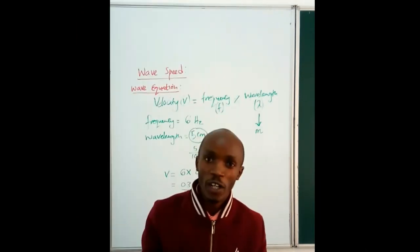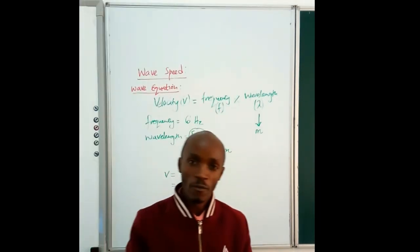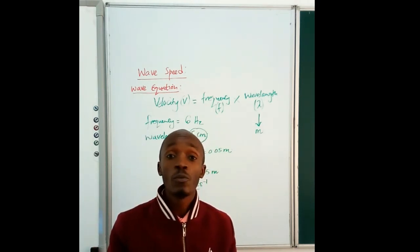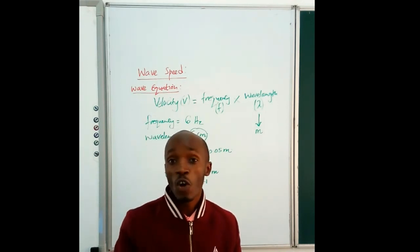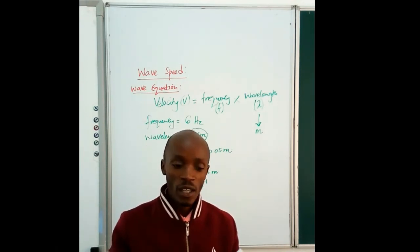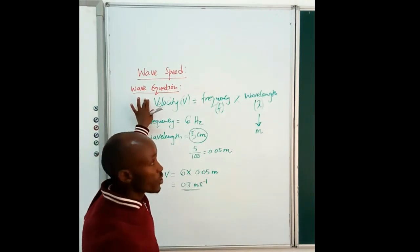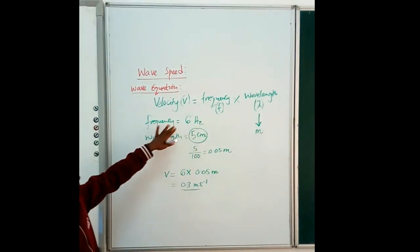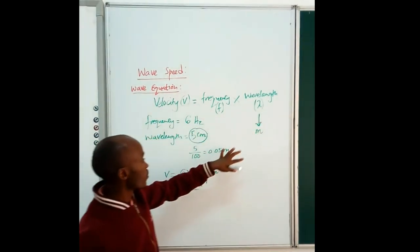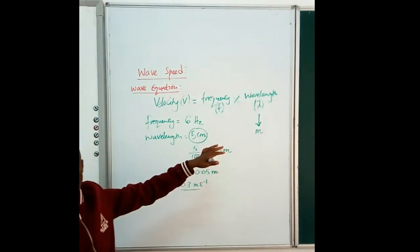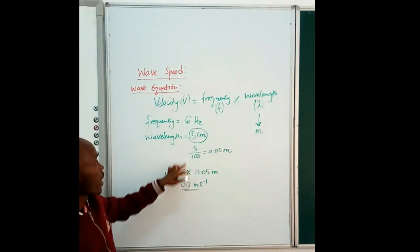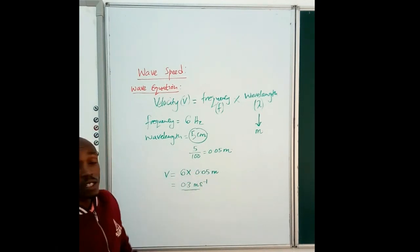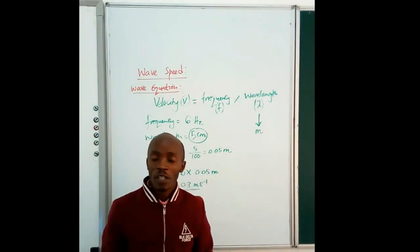We have been able to successfully find the speed of a wave by first of all, finding the frequency of the wave. Two, by being able to find the wavelength of a wave. And three, then combining all that in what we call the wave equation. That is velocity is equal to frequency times wavelength. And then changing the unit of wavelength from centimeters to meters. We substitute in the values, that is the 6 Hertz and the 0.05 meters to get 0.3 meters per second. So that is our wave speed.